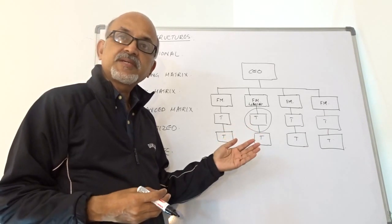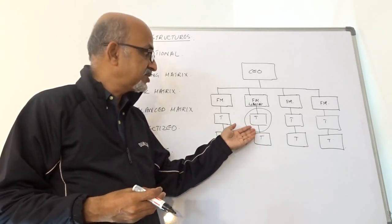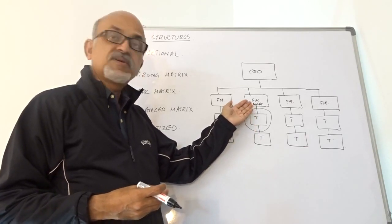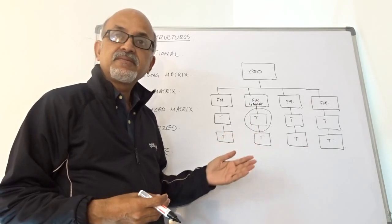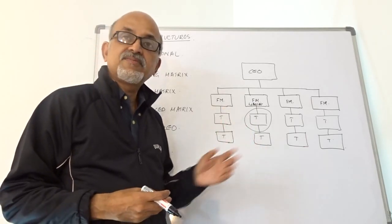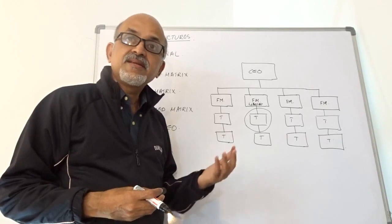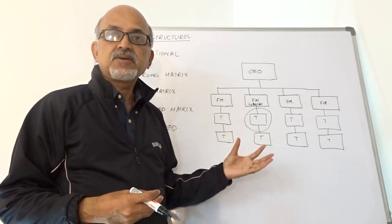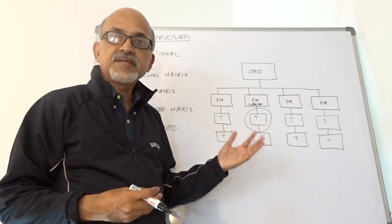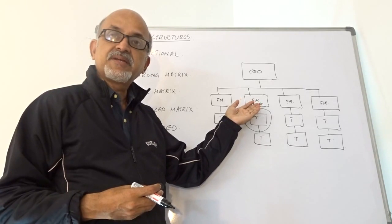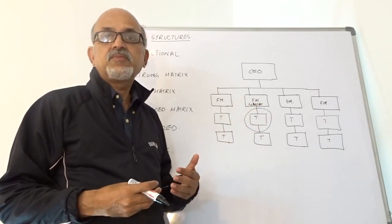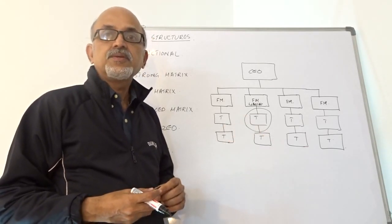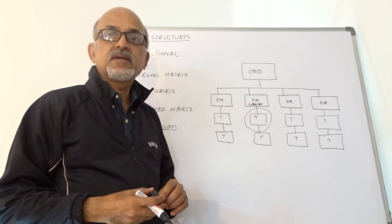He is more like a glorified secretary. Whatever you give to him, he will take it and put it on the desk of the functional manager. A project manager in a functional organization doesn't need a Montblanc pen, because he may not be signing any major document or any check. Everything will be done by the functional manager. If you are a project manager in a functional organization, you have very less authority level.